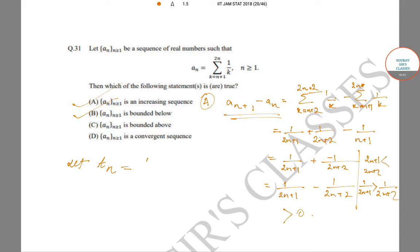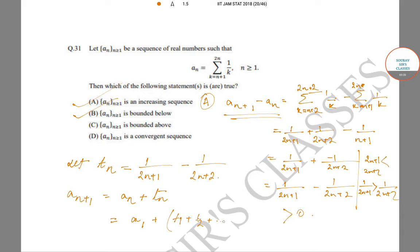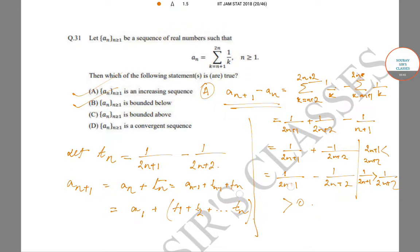Let t_n equal 1/(2n+1) minus 1/(2n+2). Then a_{n+1} = a_n + t_n, which means a_{n+1} = a_1 + t_1 + t_2 + ... + t_n. So ultimately a_{n+1} equals a_1 plus the sum of t_k from k=1 to n.